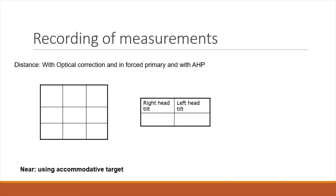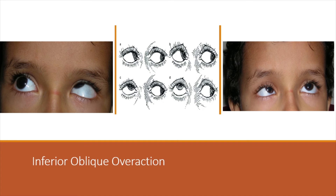For near, always use an accommodative target, never use light. However, Krimsky tests can be performed in very small and uncooperative children. While doing ductions and versions, look for inferior oblique overaction or superior oblique overaction and underaction. Inferior oblique overaction is graded: plus one, plus two, plus three, and plus four.